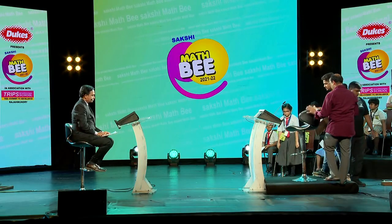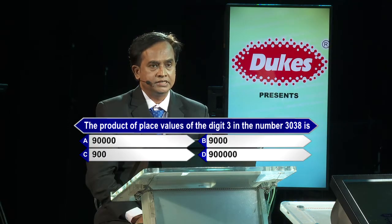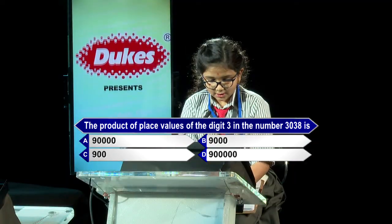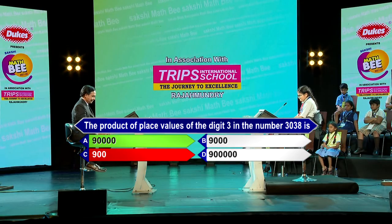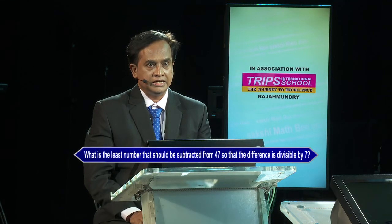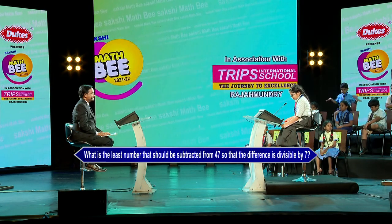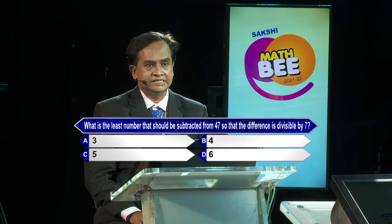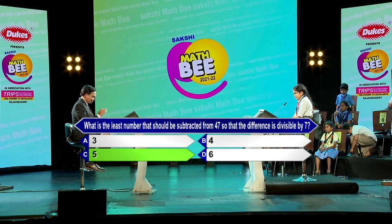Next contestant from Trips International School Rajmandri, please come. Are you ready? The product of place values of the digit 3 in the number 3038 is? Options: A) 90,000, B) 9,000, C) 900, D) 9 lakh. Option C — kindly lock option C 900. I'm so sorry, C is the wrong answer; option A is the correct answer. Next question: What is the least number that should be subtracted from 47 so that the difference is divisible by 7? Options: A) 3, B) 4, C) 5, D) 6. Option C — kindly lock option C 5. Brilliant, option C is the correct answer.